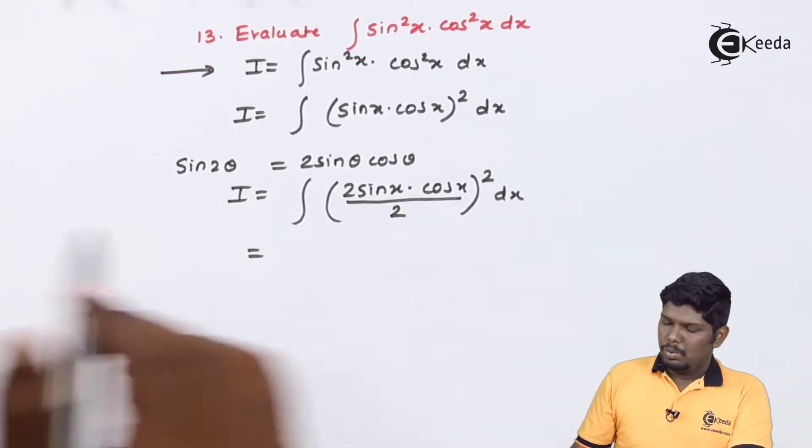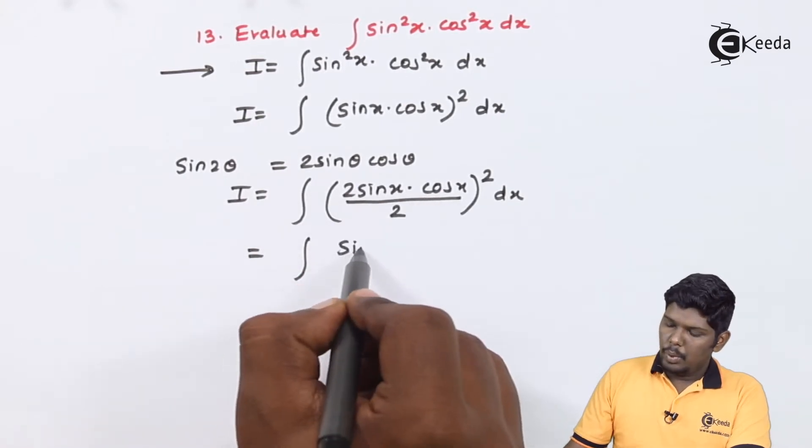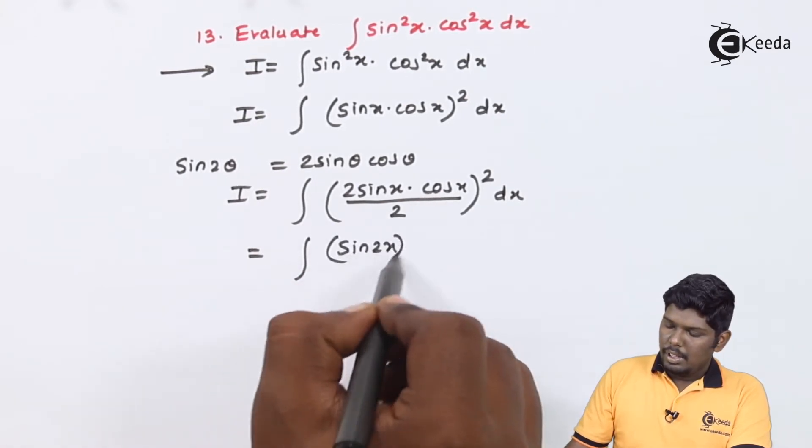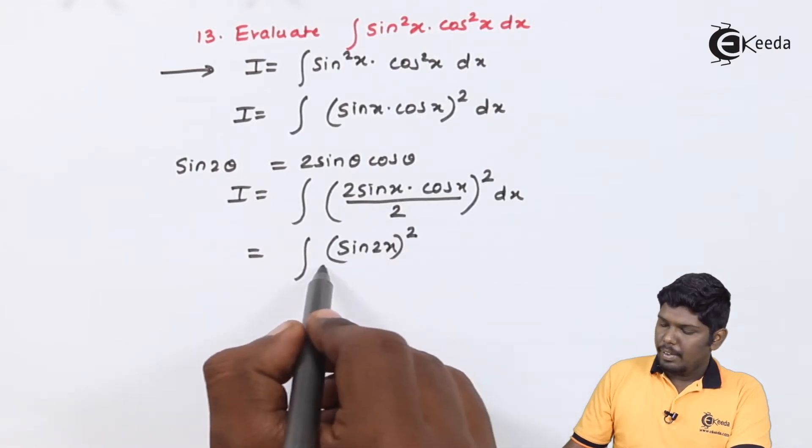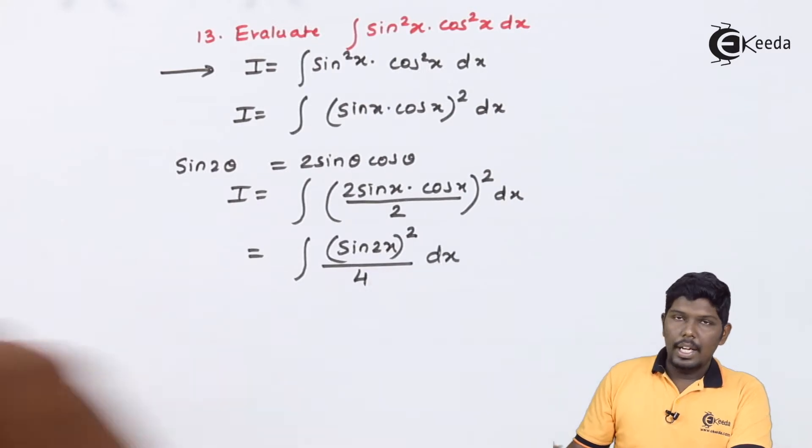This will give you 2 sin x cos x as sin 2x the whole square. And 2² will give you 4 dx.